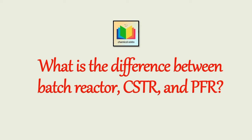Chemical reactors vary widely in size, shape, and in the method of operation. But there are three basic reactors used in the chemical industry, which are batch reactor, continuous stirred tank reactor (CSTR), and plug flow reactor (PFR). So let's see the difference between these three basic reactors.